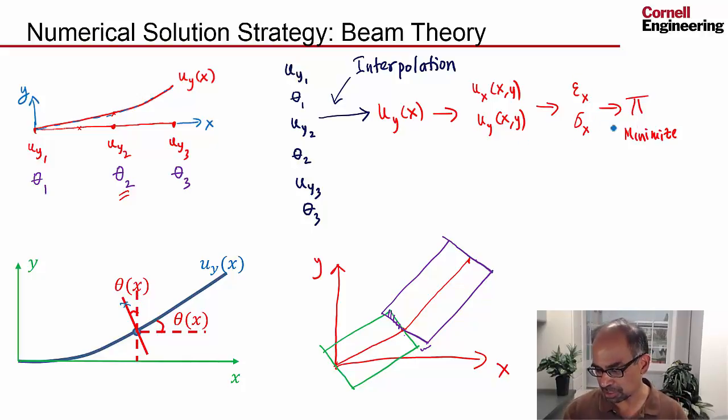And from that, I can calculate strains. Given material properties, I can calculate stresses. And from that, I can calculate the potential energy. So essentially, in terms of these values, I can calculate the potential energy. And then ANSYS would generate the algebraic equations required by minimization of the potential energy or from the boundary conditions.